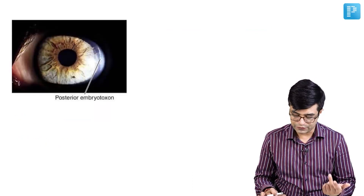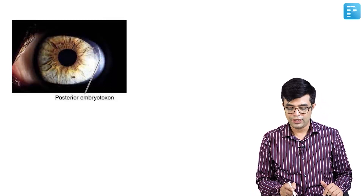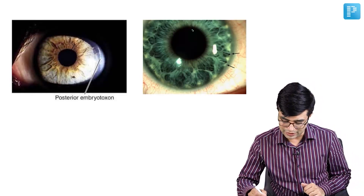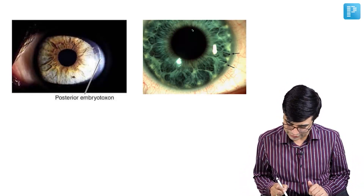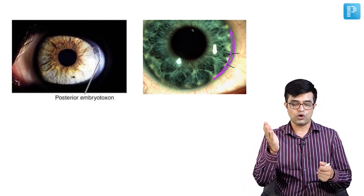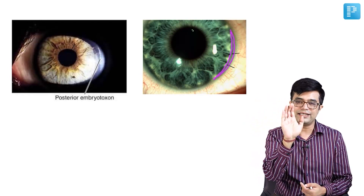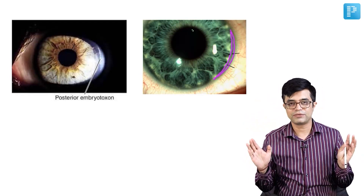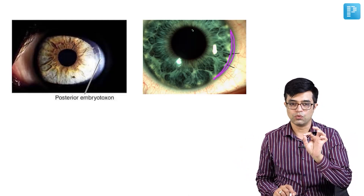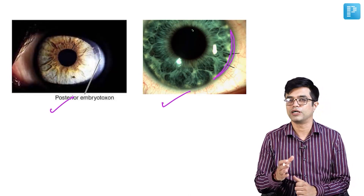On slit lamp microscopy, there is a prominent white line visible — this is posterior embryotoxon. Using side illumination it appears as a white line; without illumination it appears as a thickened dark line. This is Schwalbe's line, which is normally very thin and not visible, but becomes thickened and anteriorly displaced in Alagille syndrome. Posterior embryotoxon is the ocular hallmark of Alagille syndrome.